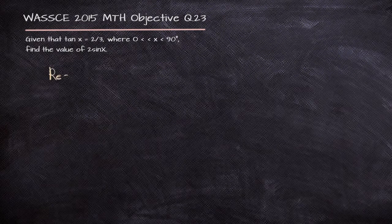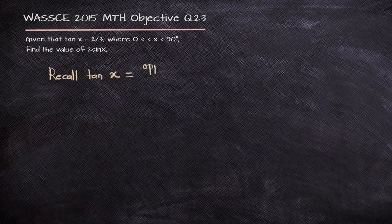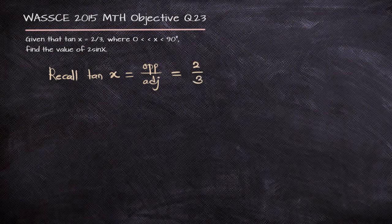We are told that tan x is 2 over 3, and we are to find the value of 2 sin x, with x between 0 and 90, meaning that it is an acute angle.